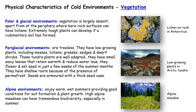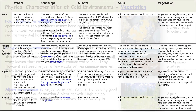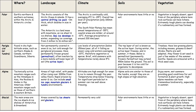Moving to alpine environments — the mountainous areas — many enjoy warm wet summers, providing very good conditions for soil formation and plant growth. Many high alpine meadows have tremendous biodiversity, especially in the summer. This final slide is a summary of everything we've covered, showing where these cold environments are, what their landscapes are like, and their climate, soils and vegetation.